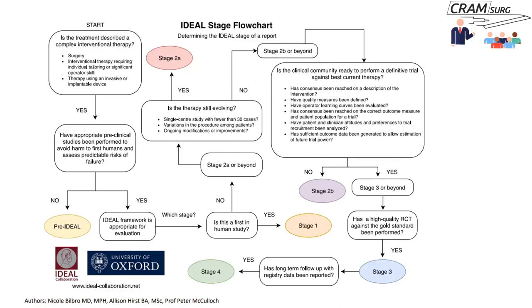There is a flowchart on the IDEAL website — if you have a technology and some reports and want to determine what stage that technology is at, you can go through this flowchart and figure out whether you are at the preclinical stage zero, a first human study at stage one, the development stage, exploratory stage, and so on.